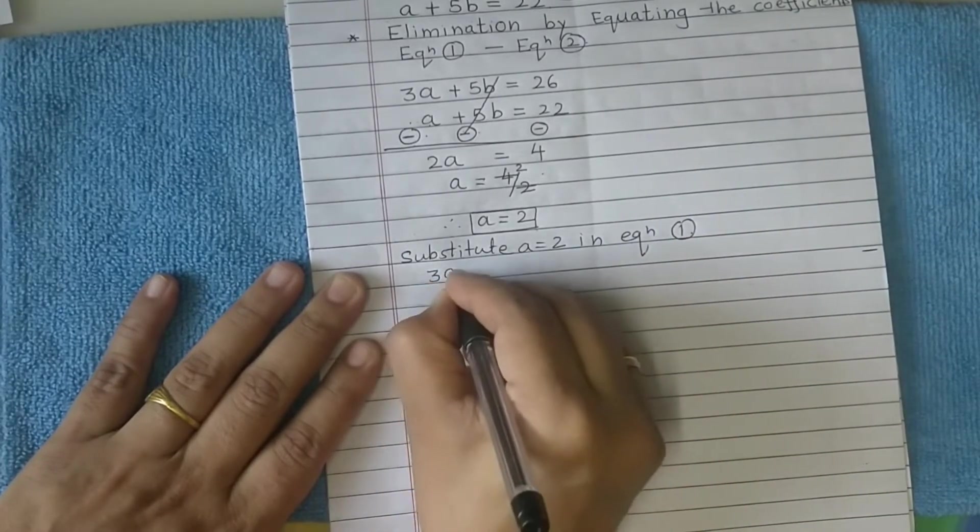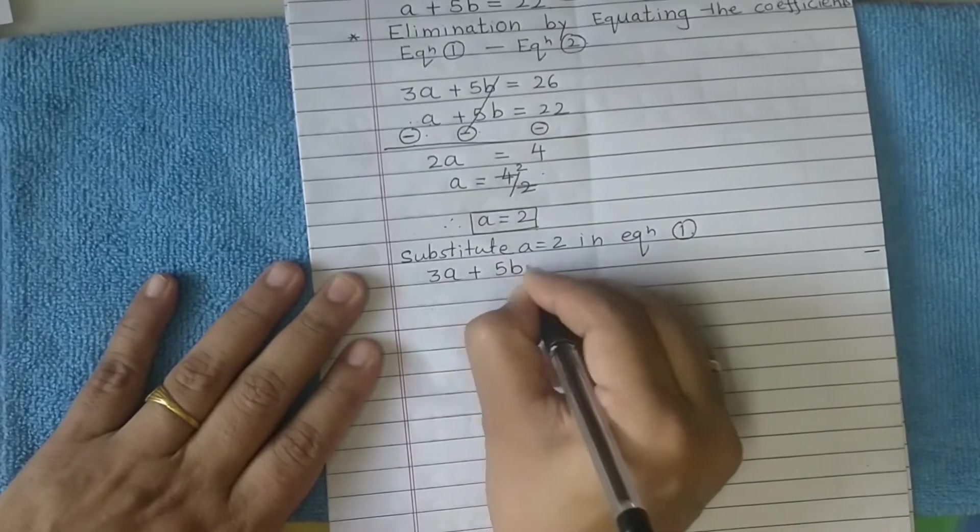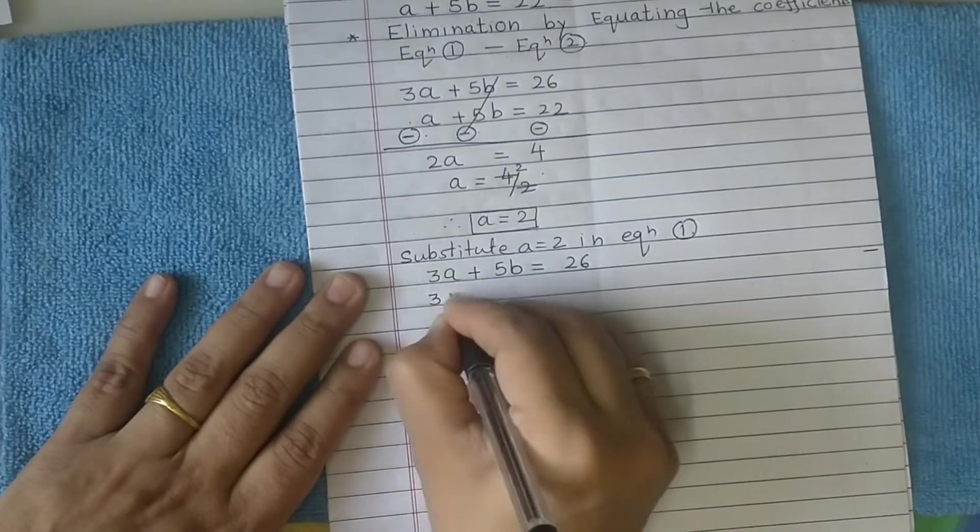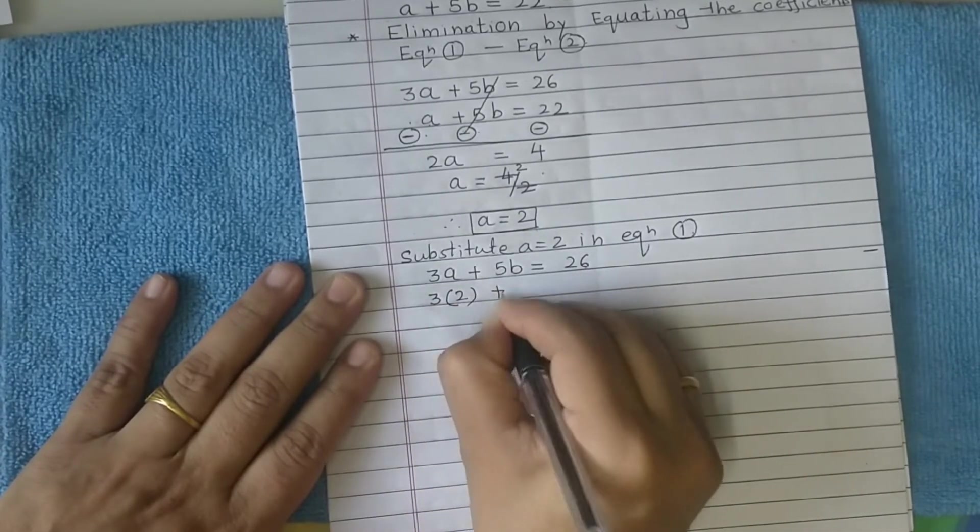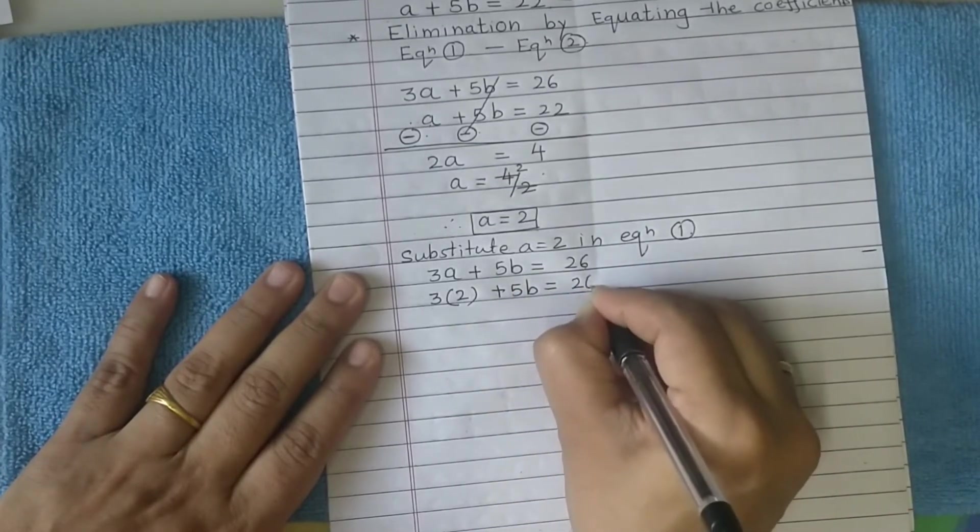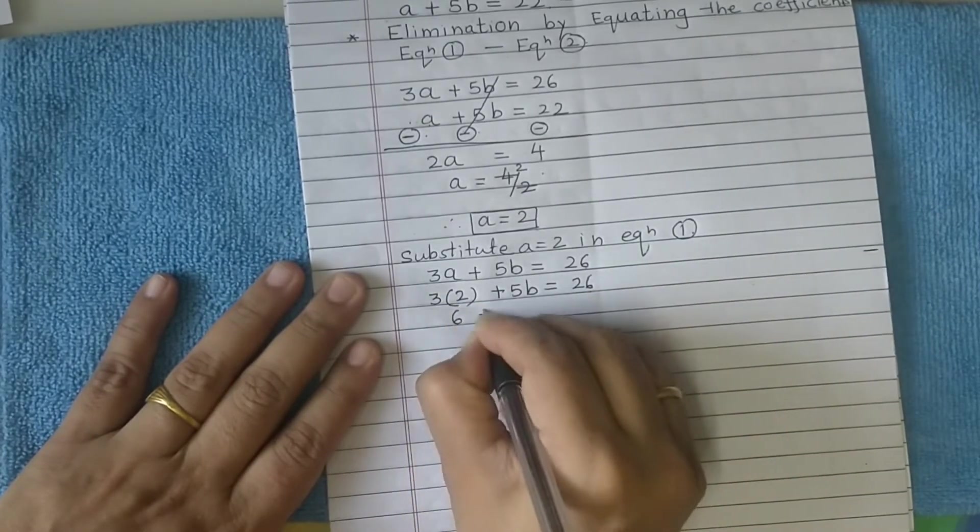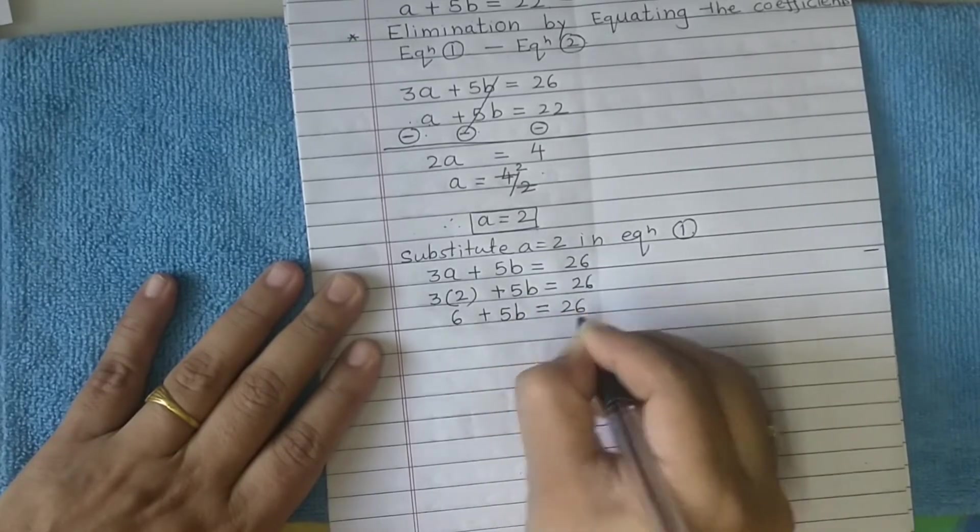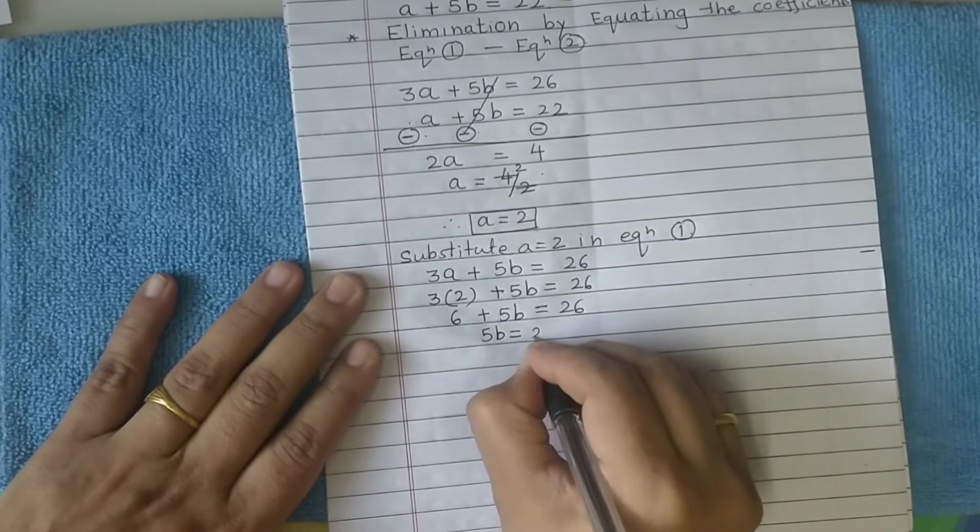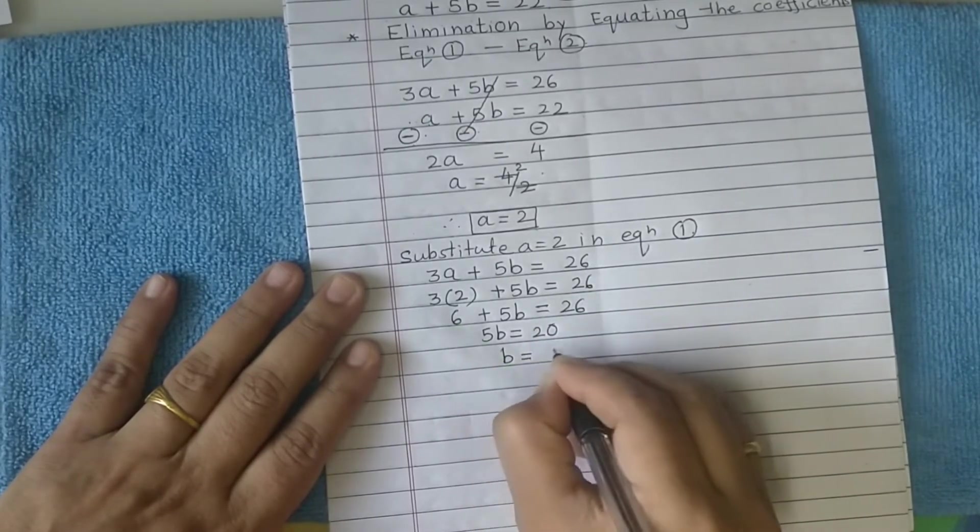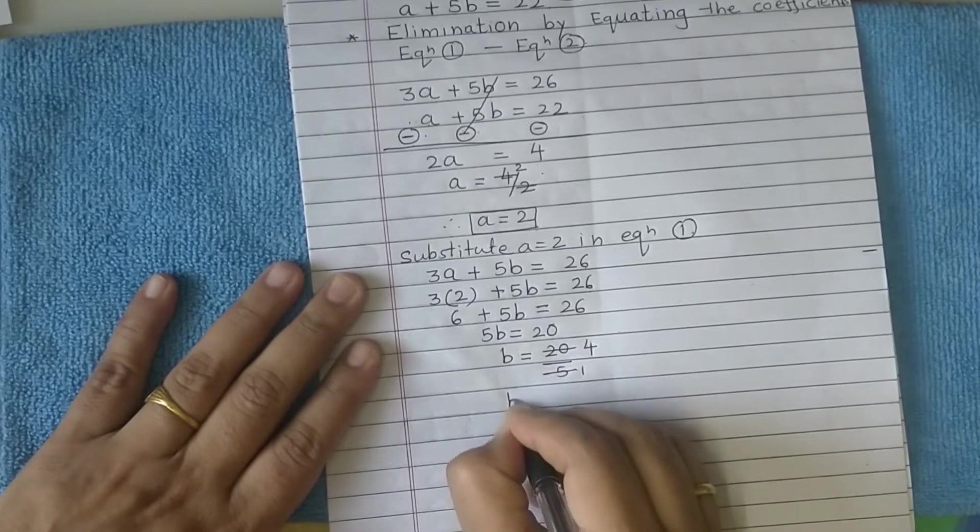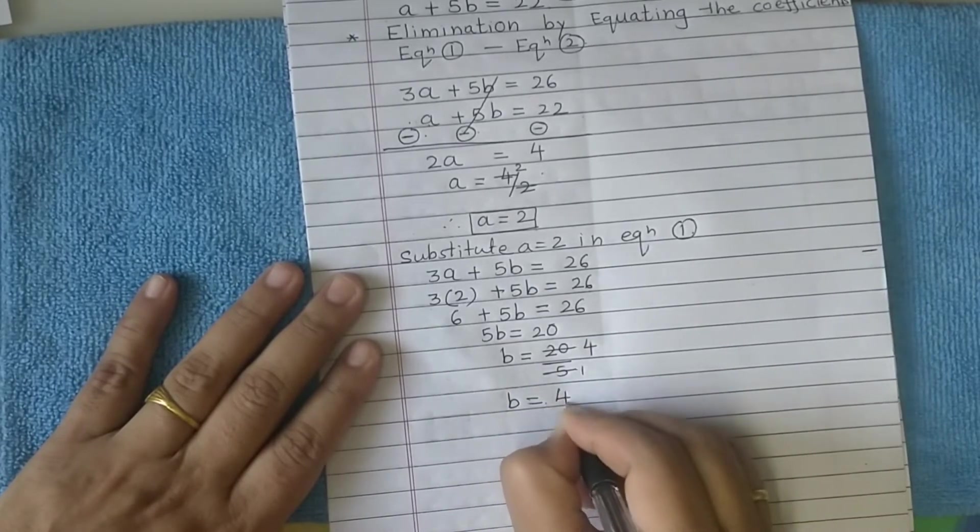Equation 1 is 3a plus 5b equals 26. So 3 times 2 plus 5b equals 26. That's 6 plus 5b equals 26. So 5b equals 26 minus 6, which is 20. Therefore b equals 20 upon 5.